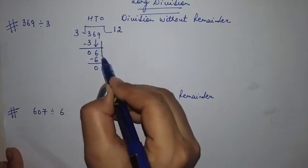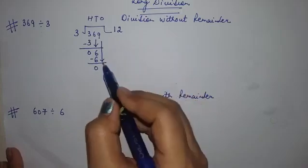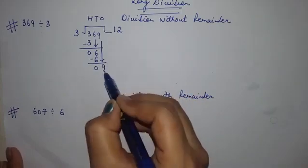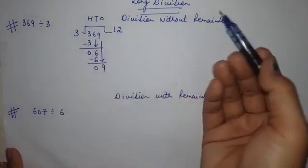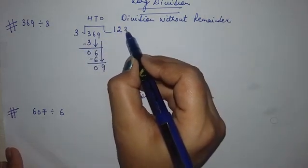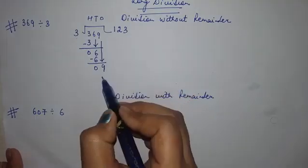Now take this 9 here, write 9 here. 3 threes are 9 or 9 divided by 3 equals to 3. So we will write 3 here. So 3 threes are 9.